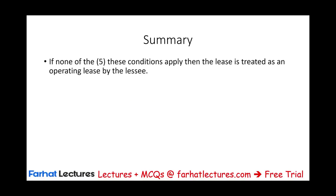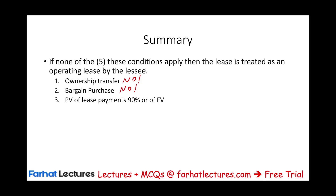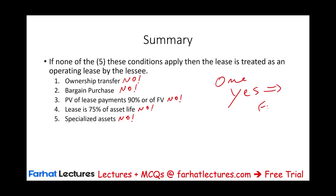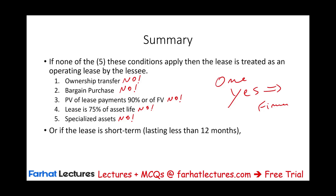To summarize: if none of the five conditions apply, the lease is treated as an operating lease by the lessee. The five criteria are: (1) ownership transfer at end of lease, (2) bargain purchase option, (3) present value of lease payments is 90% or more of fair value, (4) lease term is 75% or more of asset useful life, and (5) specialized asset. Meeting just one gives a finance lease; failing all five gives an operating lease.